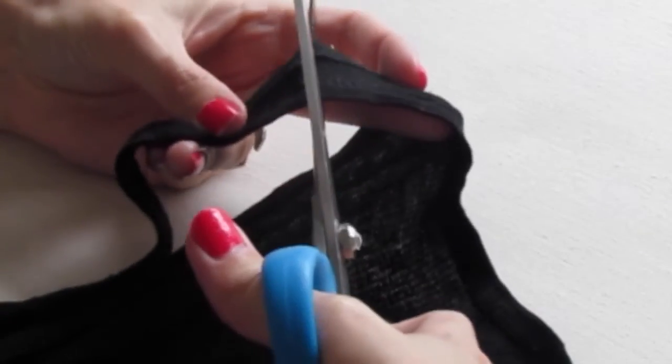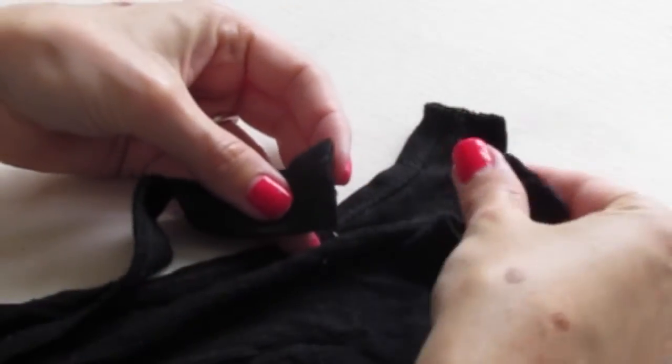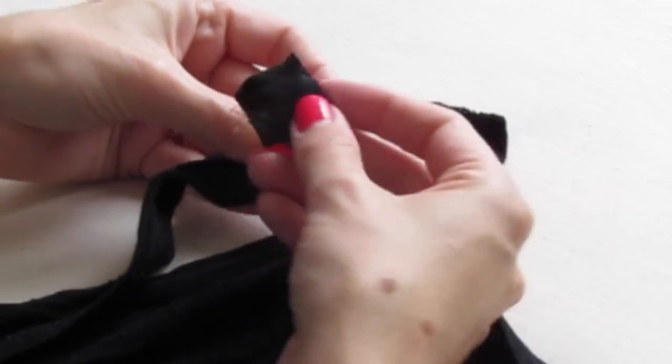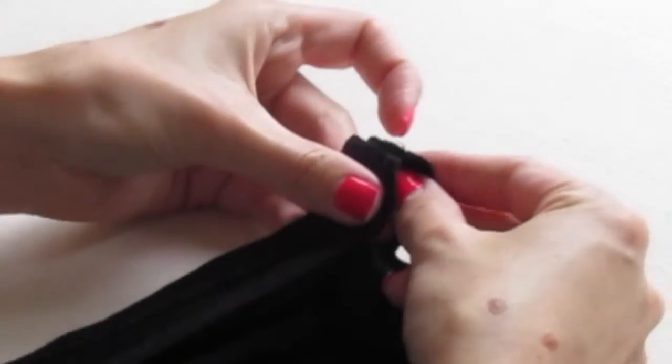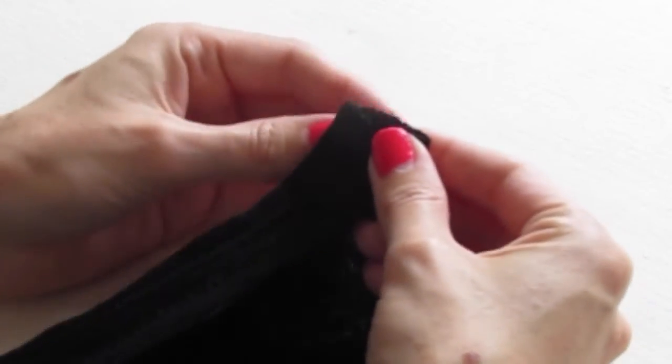So now we're going to cut the next strap at the same place, the shoulder seam. Use the piece you cut off the first strap to measure how much to cut off this strap. Cut the same amount off. And now we'll do the same thing and sew this strap together.